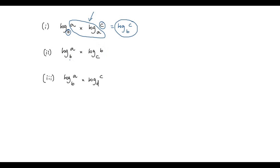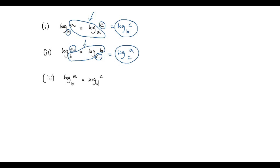We have to mark the part which covers the base of the first logarithm and the second logarithm along with its argument. Now we have to remove this part and write the logarithm with argument A and base C. So, log A to the base C. The product of the two logarithms log A to the base B and log B to the base C is equal to log A to the base C.